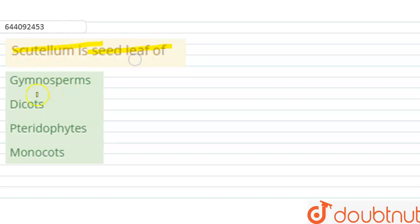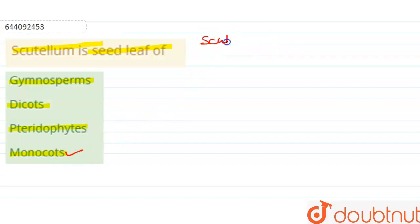...and the options are gymnosperms, dicots, pteridophytes, and monocots. The right answer is monocots — scutellum is present in monocotyledons.